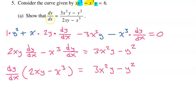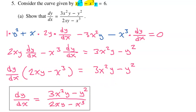So I'm going to put dy/dx out in front of the parentheses, leaving 2xy minus x to the third power, equal to 3x squared y minus y squared. We are solving for dy/dx, so to get dy/dx by itself, I need to divide both sides by 2xy minus x to the third power, so this expression ends up in the denominator. And this is exactly what we were supposed to show. That's it for part A.